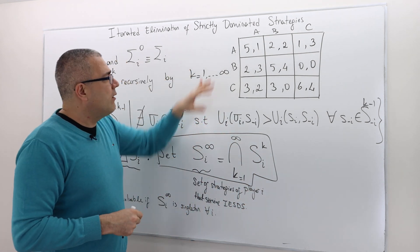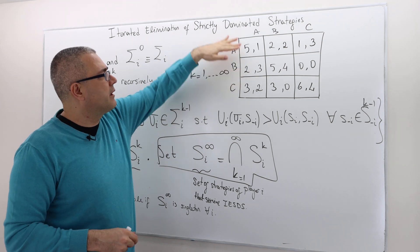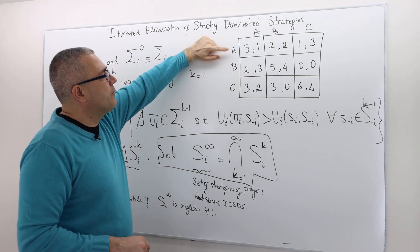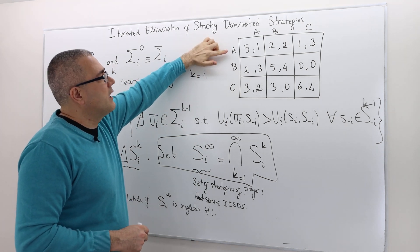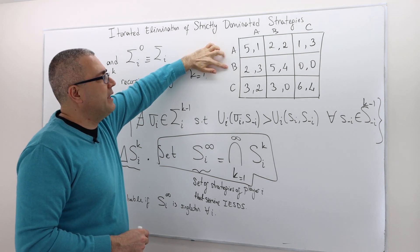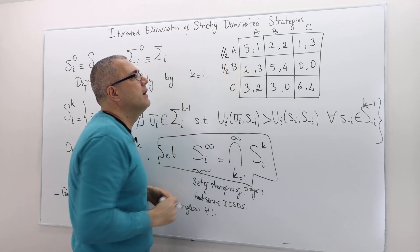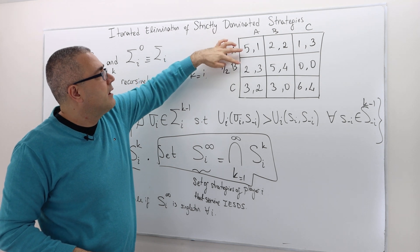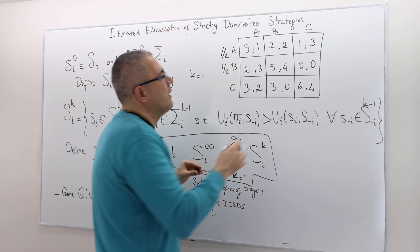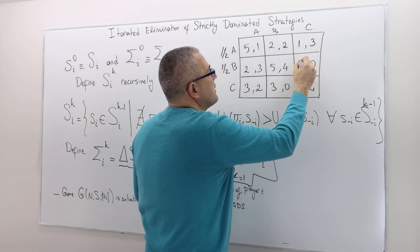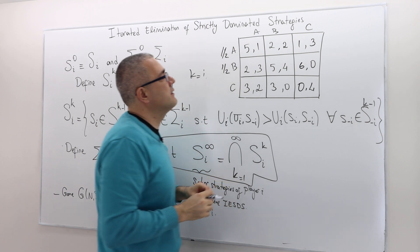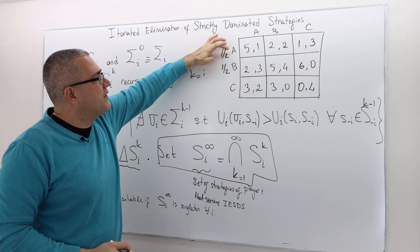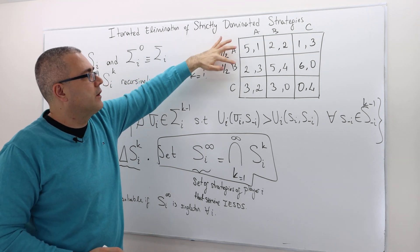Now let's look at a simple game — two players, each with three strategies. A mixture of A and B with probability one-half each is going to strictly dominate C. There's a mistake in the payoff — let me correct it: make that zero and this six. Now, the mixture of A and B gives an expected payoff of 3.5, which is higher than 3; and 3.5 is again higher than 0. So C is dominated.